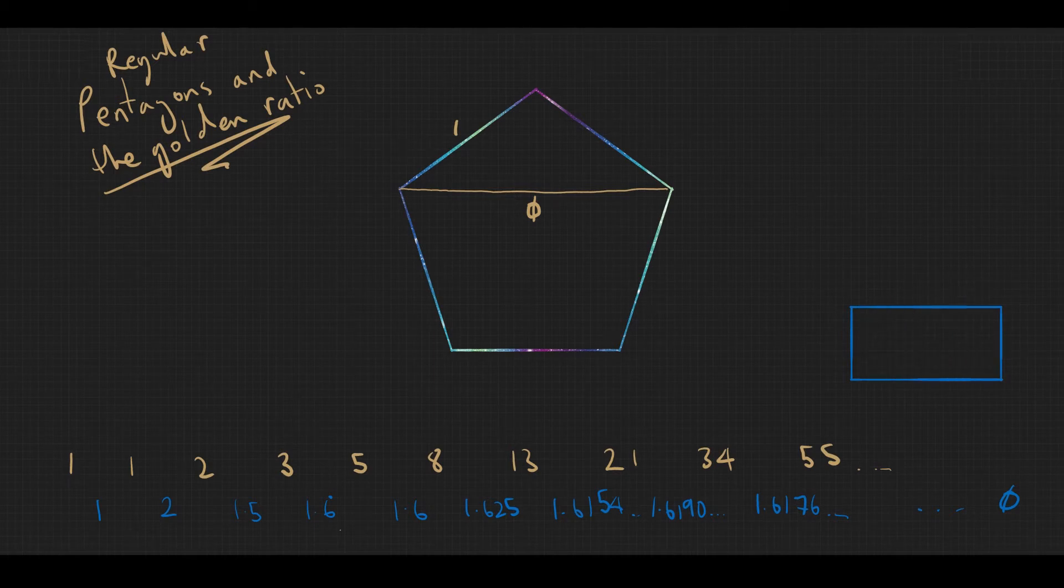But I'll show you the maths here about how we can show that that is phi—that is 1 to phi, what we call the golden ratio. So the first thing I'm going to do is work out some of these angles around here.